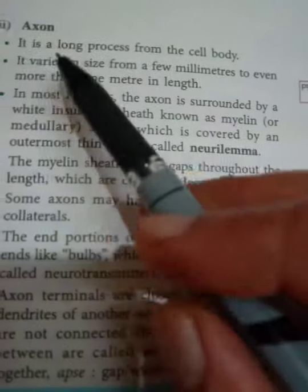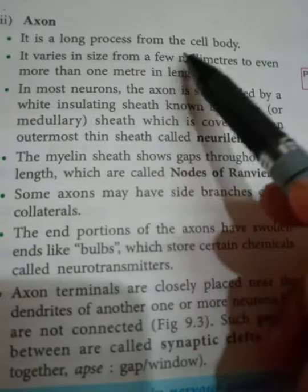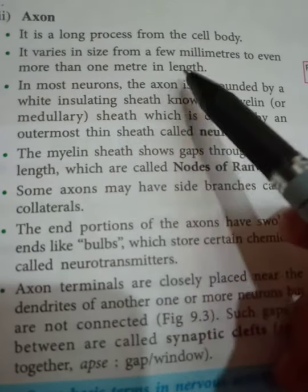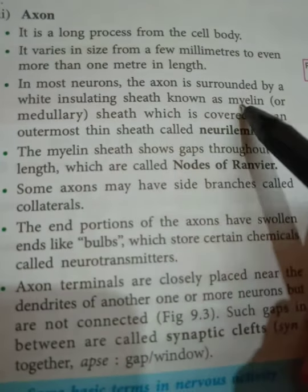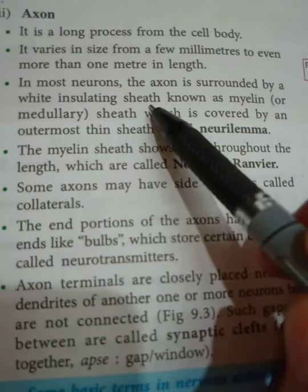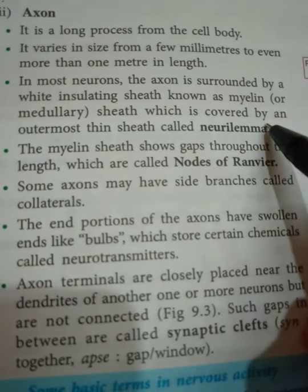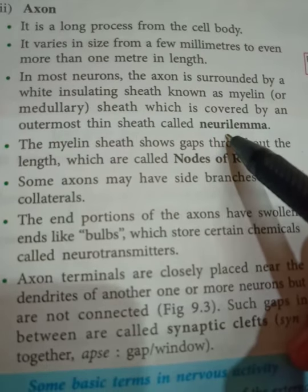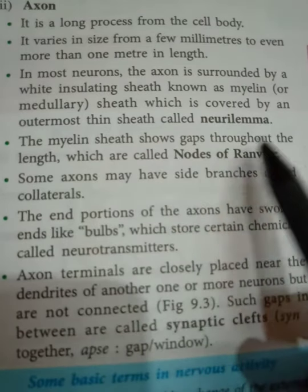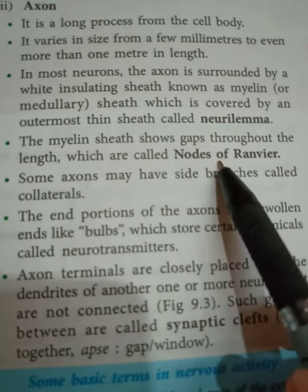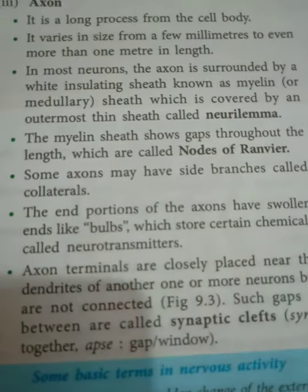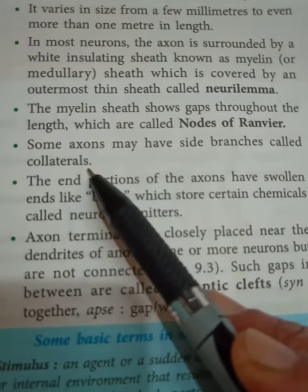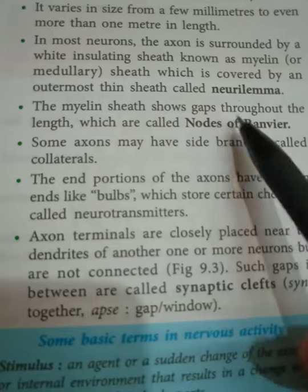The axon is the long process from the cell body and varies in size from a few millimeters to even more than one meter in length. In most neurons, the axon is surrounded by a white insulating sheath known as the myelin sheath, which is covered by an outermost thin membrane called the neurilemma — learn the correct spelling. The myelin sheath shows gaps throughout its length and those are called nodes of Ranvier.